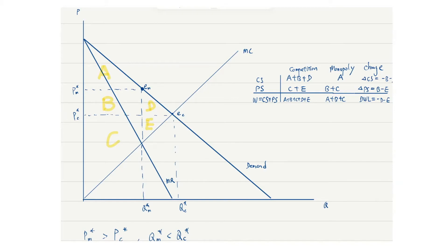Compared to the competitive case, a monopoly causes consumer surplus to decrease, and also leads to a deadweight loss, which is equal to the area of triangle D and E.